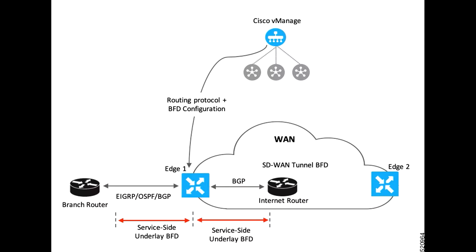Similarly, Edge 1 is connected to the Internet router through its transport interface. BFD is configured for BGP between the transport side of Edge 1 and the Internet router. BFD detects the health of the connection and reports any failures.